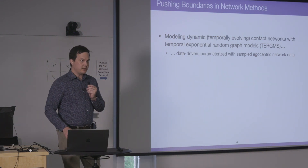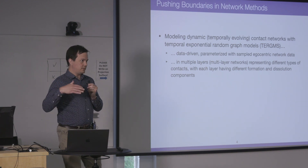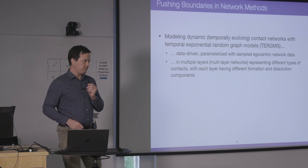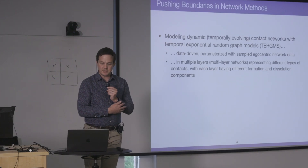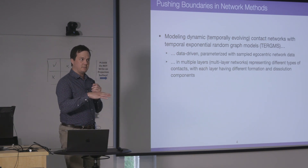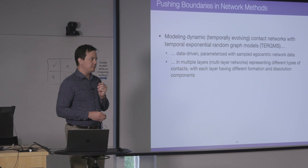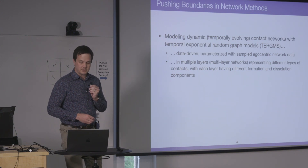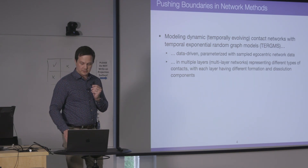For our network data, this is sampled egocentric data. All of the research-level models that we publish are also multi-layer networks — networks that represent different types of contacts on the same set of nodes. For example, different types of sexual partnerships among the same group, where each layer has a different set of formation and dissolution predictors.